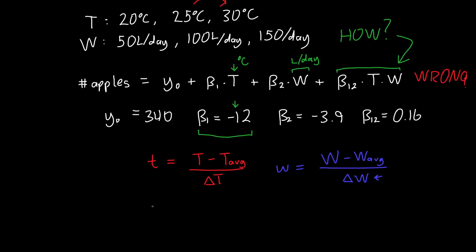That way, my temperature takes the values of minus one, zero, and one. And water also takes the values of minus one, zero, and one. And so this way, I can much more easily compare the effects of my variable. So which one is the most important? And I don't have to worry about β₂ having awkward units of days over liters, β₁ having units of per temperature.